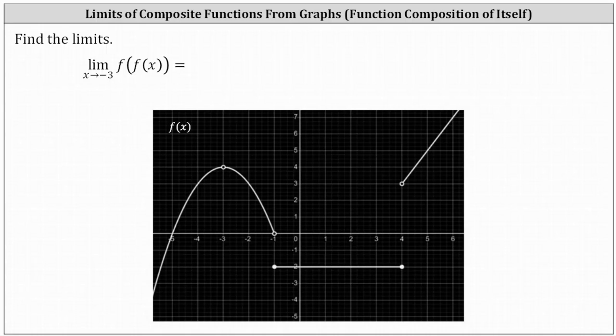Welcome to two examples on how to determine limits of composite functions, where each composite function is a function composition of itself. For the first example, we have the limit as x approaches negative three of f of f of x. We begin by determining the limit as x approaches negative three of the inner function f of x using the graph below.